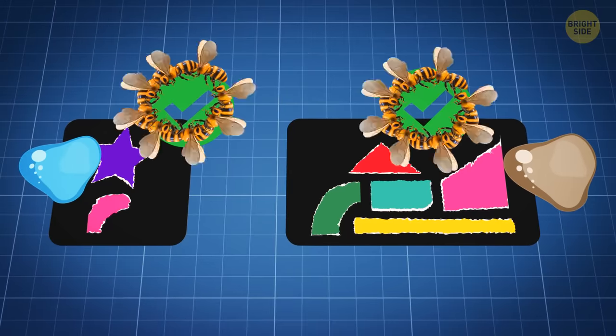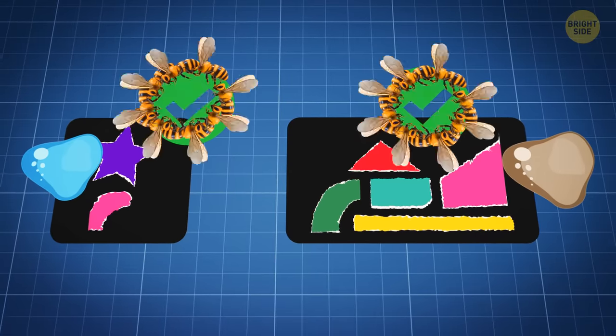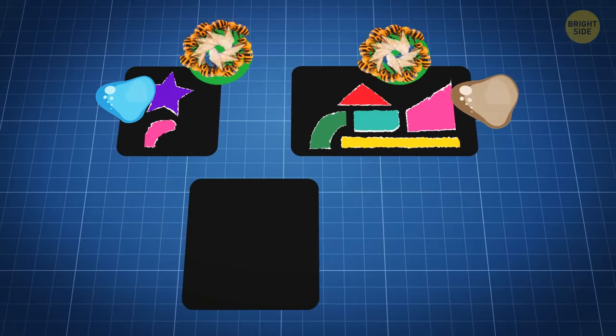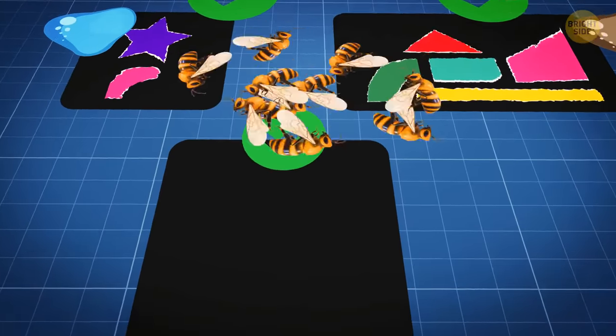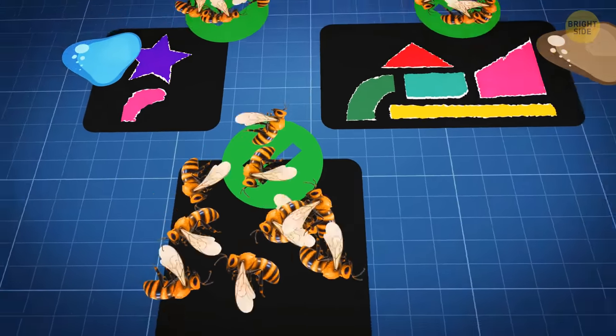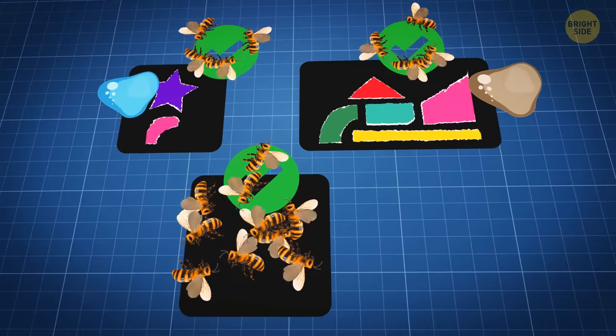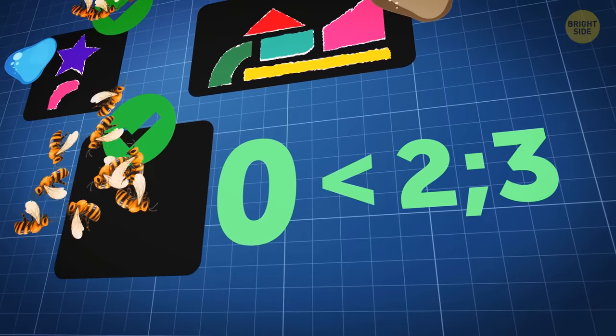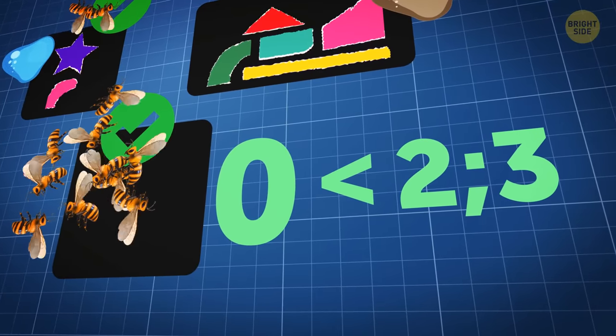Once the bees got the hang of it, the researchers introduced a new option, a blank picture with no shapes at all. And the bees chose the empty picture over images with two or three shapes almost half the time. This suggests that they understood that zero means less than two or three.